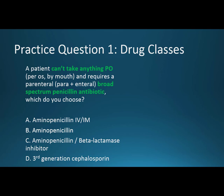Let's go to practice question one using drug classes. The setup: a patient can't take anything PO — per os, meaning by mouth — and requires a parenteral route. Parenteral comes from 'para,' meaning outside of, and 'enteral,' meaning the GI tract, so parenteral means outside of the GI tract. We're looking for a broad-spectrum penicillin antibiotic given parenterally.